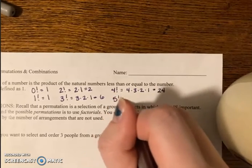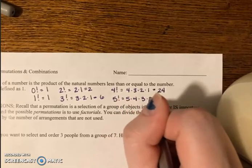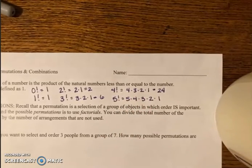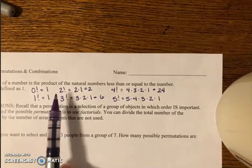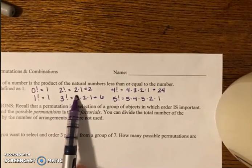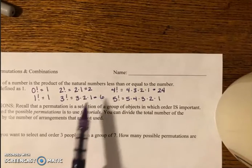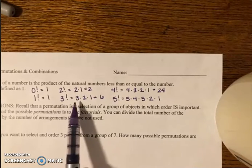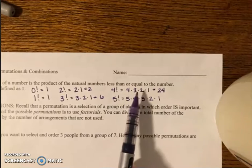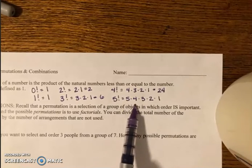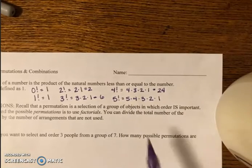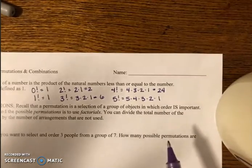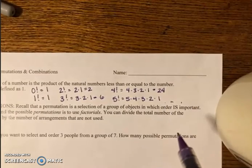5 factorial is 5 times 4 times 3 times 2 times 1. Before I keep continuing, I want to point out a pattern. All we're doing is taking the number and multiplying it by each number that's less than it until we get to 1. So 2 is just 2 times 1, 3 was 3 times 2 times 1, 4 was 4 times 3 times 2 times 1, 5 was 5 times 4 times 3 times 2 times 1, 6 would be 6 times 5 times 4 times 3 times 2 times 1, and you get the idea. We can keep on going and going.